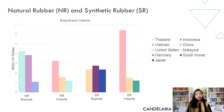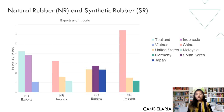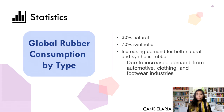The following charts show the top three countries in terms of natural and synthetic rubber exports and imports. Production of rubber is dominated by Southeast Asian countries like Thailand, Indonesia, and Vietnam. The importers of natural rubber are led by China, the United States, and Malaysia respectively. For synthetic rubber, South Korea, the United States, and Japan lead globally in production, while the top importers are China, the United States, and Germany.